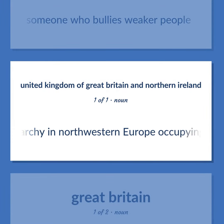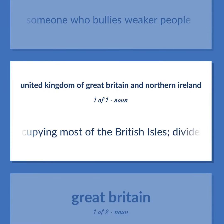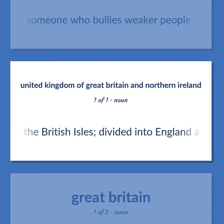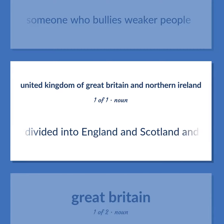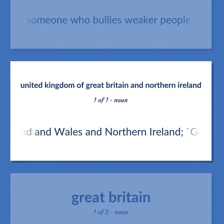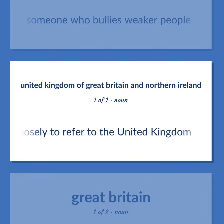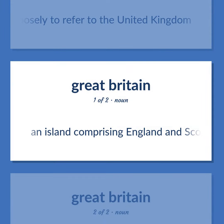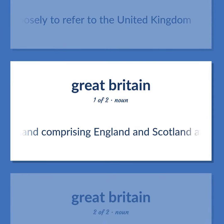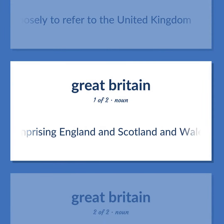A monarchy in northwestern Europe occupying most of the British Isles, divided into England, Scotland, Wales, and Northern Ireland. Great Britain is often used loosely to refer to the United Kingdom. An island comprising England, Scotland, and Wales.